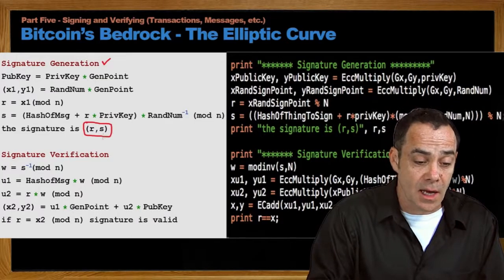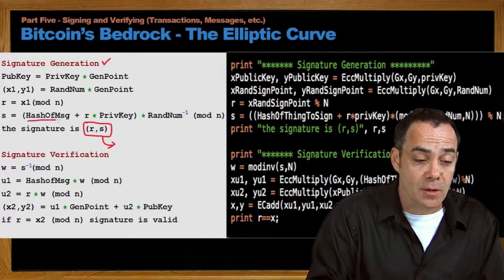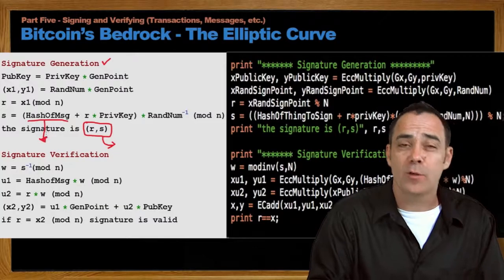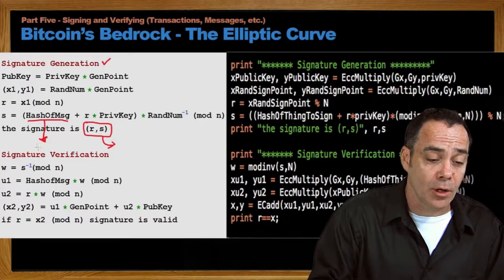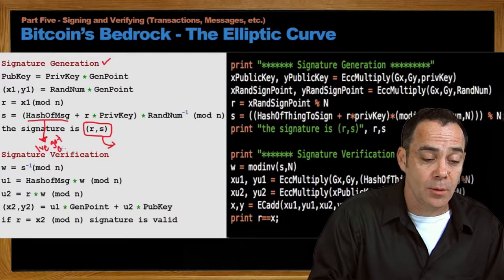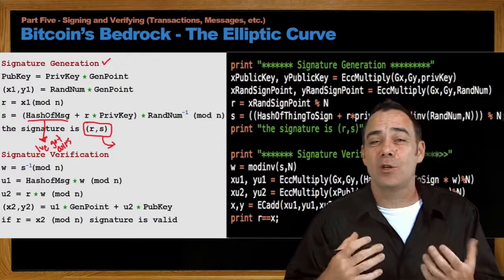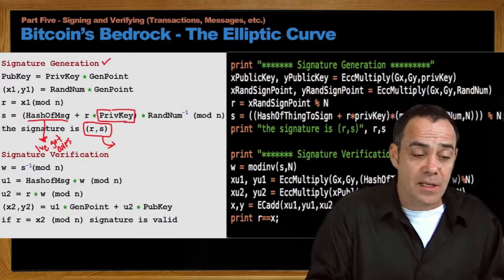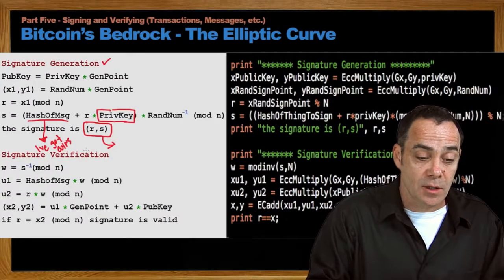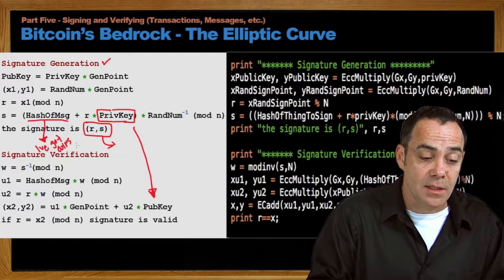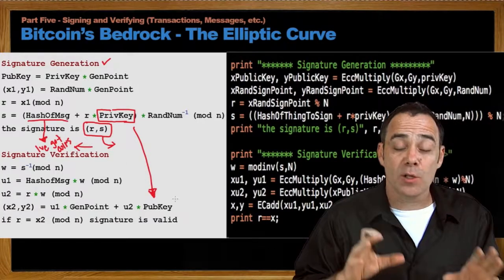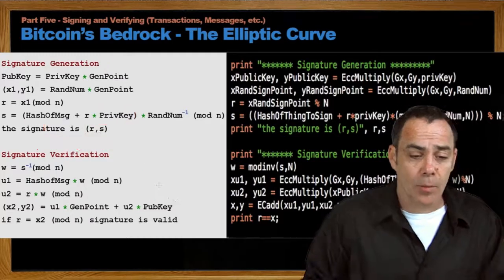You'll notice that inside of S is the hash of the message — this would be the hash of the transaction or whatever you're dealing with in Bitcoin. If you just want to prove you have access to an account, you might put a message in there, like 'I've got these coins' with your name. Then you send a signature with that message, and the steps of signature generation and signature verification will prove that you have the private key associated with the public key and that the message was indeed sent by you.